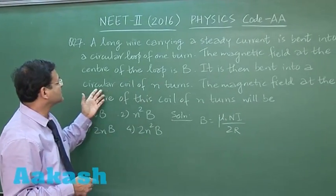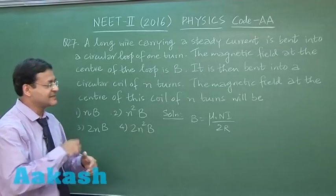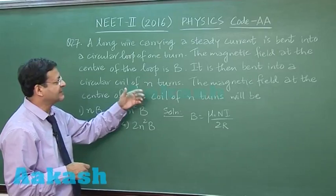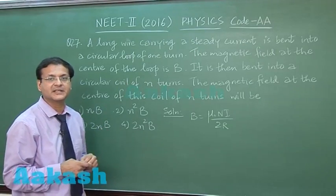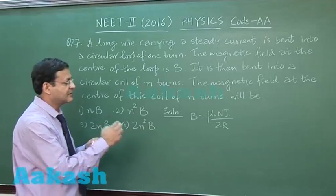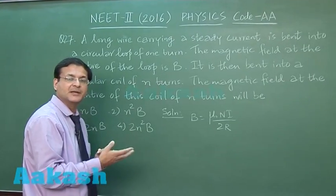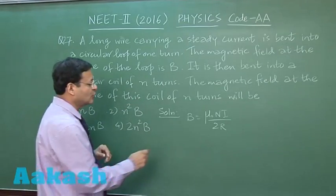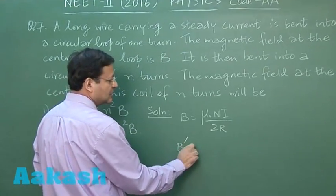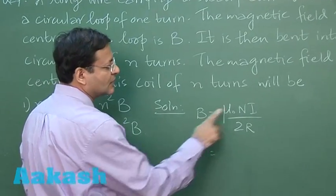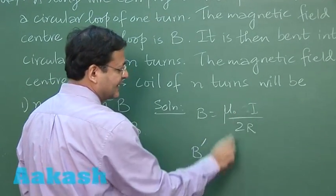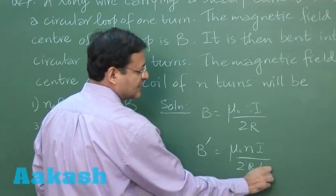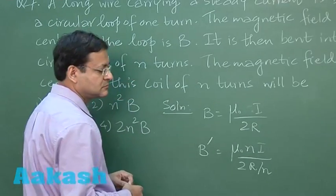Now it is bent into a circular coil of N turns, like same wire has been recoiled into N turns. Turns will be increasing and effectively the radius will also be decreasing. Remember that because the length is same. If turns is becoming N times, the radius will become R by N. The new magnetic field here, in first case turn was 1, and now in this second case the number of turns is N. I am saying that the radius is also decreased, R by N will be the new radius.